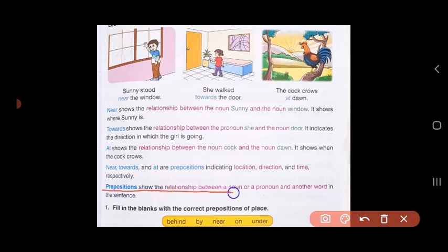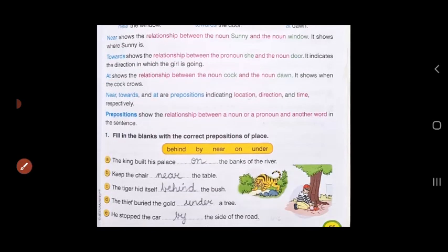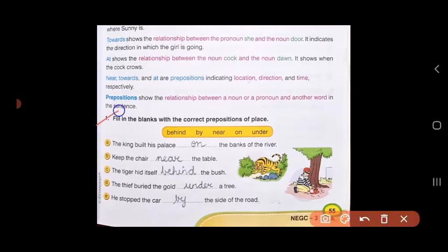B. Keep the chair near the table. C. The tiger hid itself behind the bush. D. The thief buried the gold under a tree. And E. He stopped the car by the side of the road. So here we have answered the correct prepositions of place.